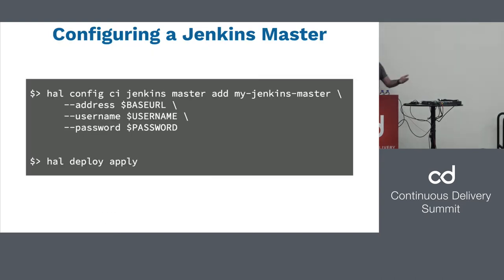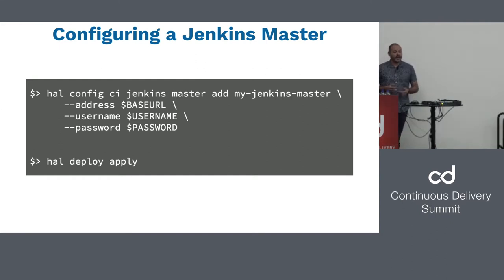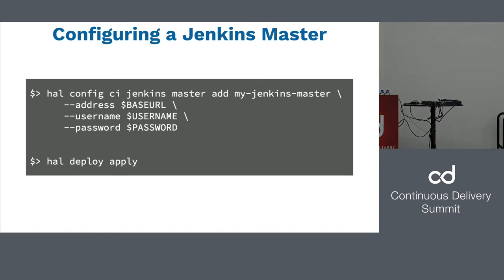How do we configure a Jenkins master? It's pretty simple. We have a tool called Halyard, which we call HAL for short. If a master already exists, you just configure it by giving it the Jenkins name, the URL, and the username and password to connect to the API. Then we redeploy Spinnaker, and Spinnaker will start polling Jenkins, asking for the jobs that are available and which jobs have been executed and completed. Now we can start integrating our pipelines with Jenkins.